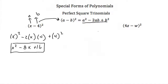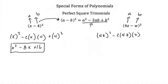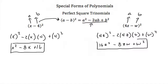Let's try one more: 4z minus w squared. Here our a is 4z and our b is w. Plugging in: 4z squared minus 2 times 4z times w plus w squared. Now 4z squared is 16z squared, 2 times 4 is 8, giving us minus 8zw, plus w squared. So 4z minus w squared equals 16z squared minus 8zw plus w squared.